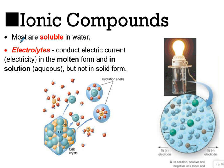Most ionic compounds are soluble in water, and they are electrolytes when soluble. If they dissolve, they form ions. Forming ions allows them to conduct electric current, both in aqueous solution and when they're molten — but not in solid form.